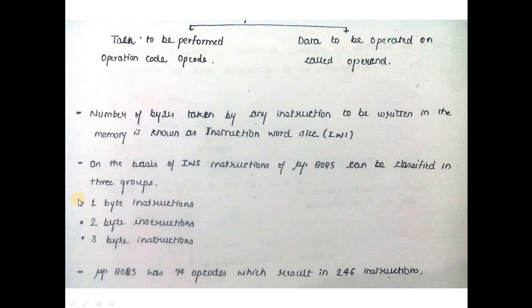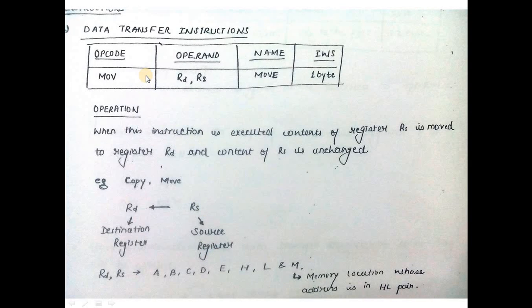All register transfer instructions are one-byte instructions. All immediate data transfer instructions are two-byte instructions. All direct 16-bit data handling instructions are three-byte instructions. First instruction is MOV: moves source register to destination register, which is a one-byte instruction.